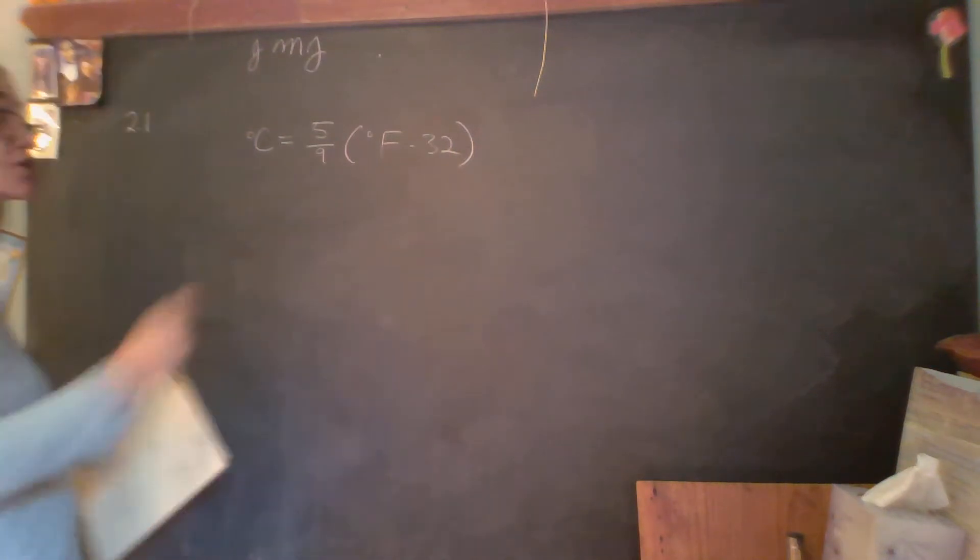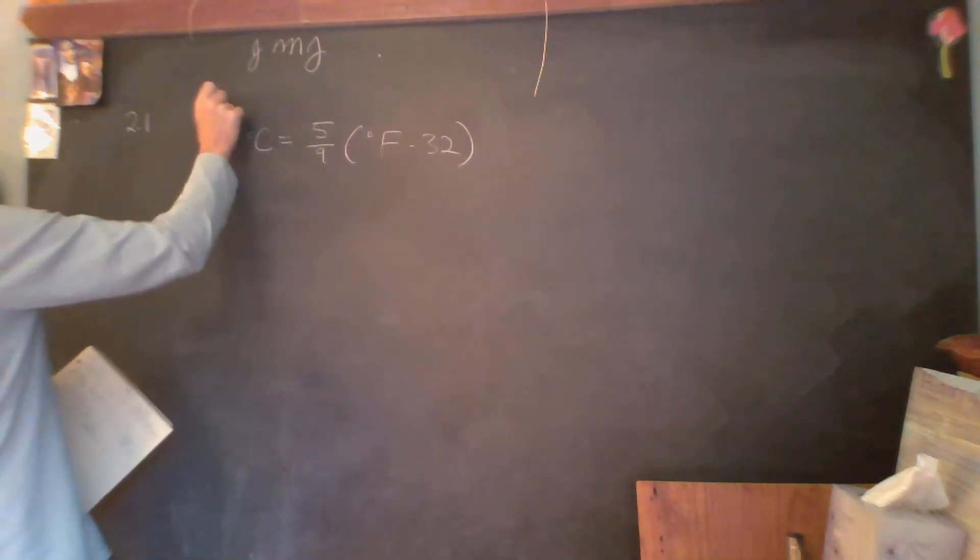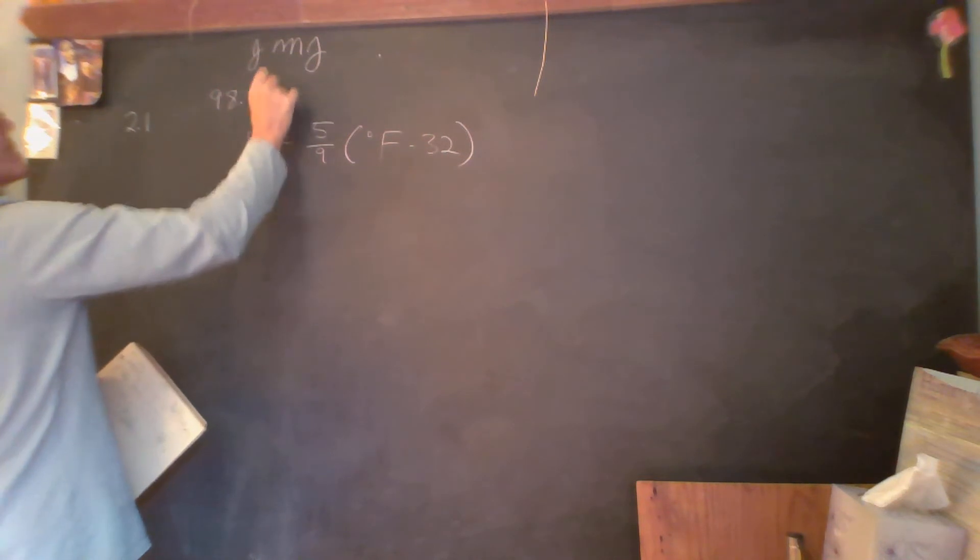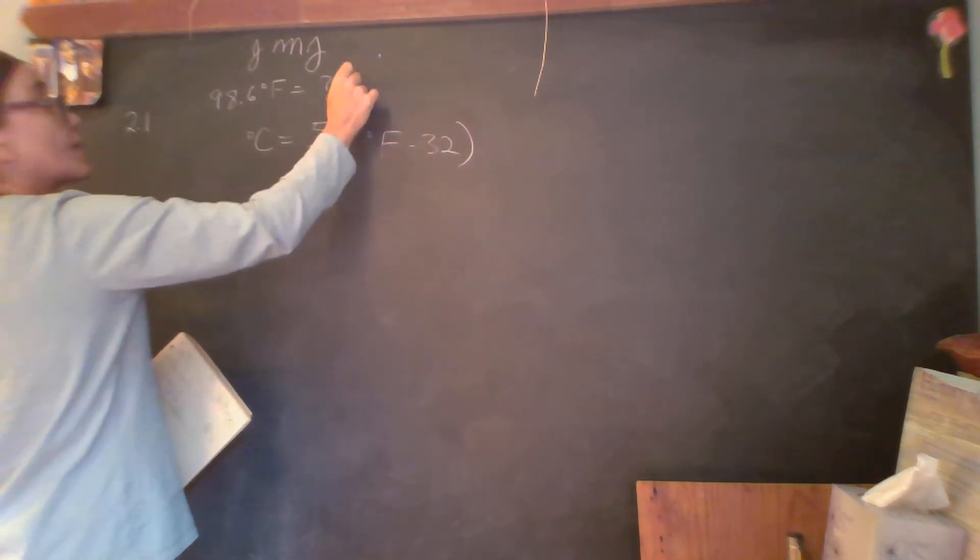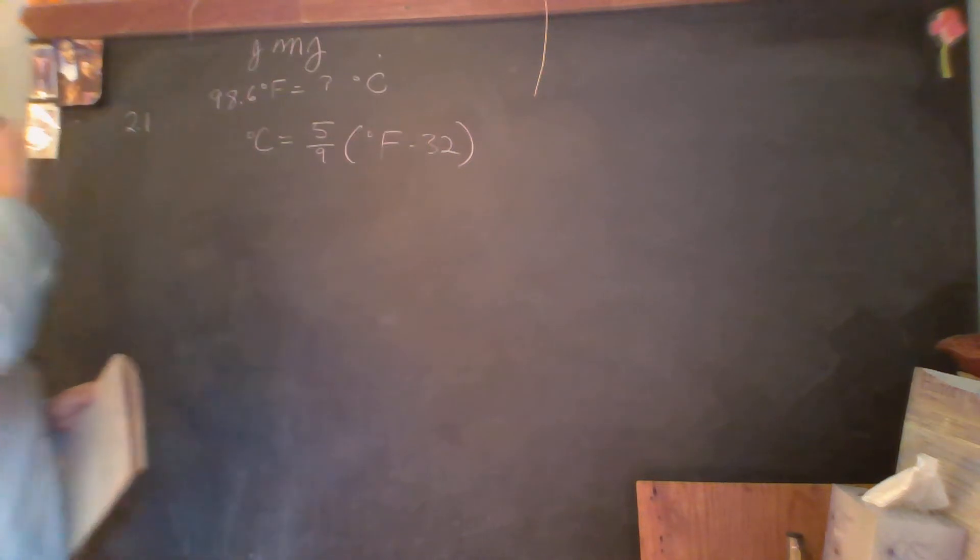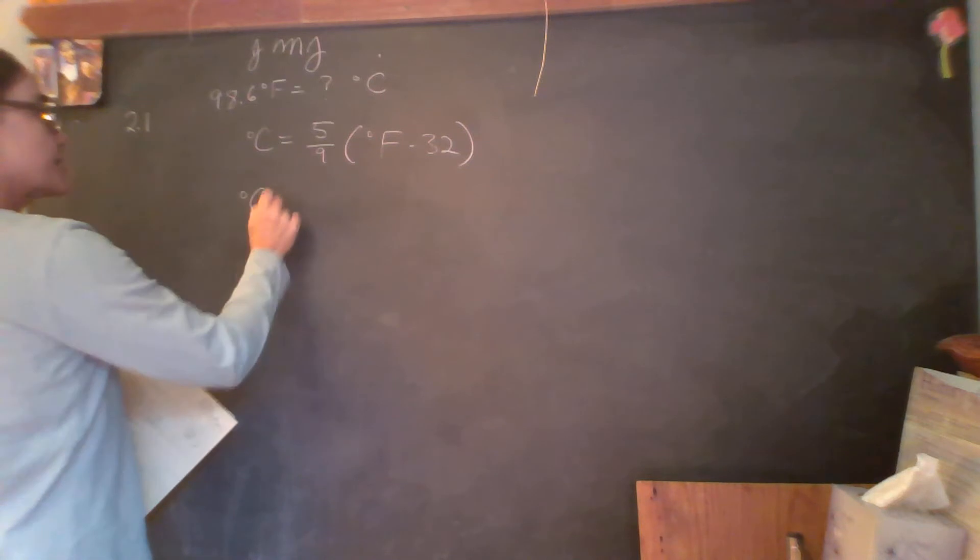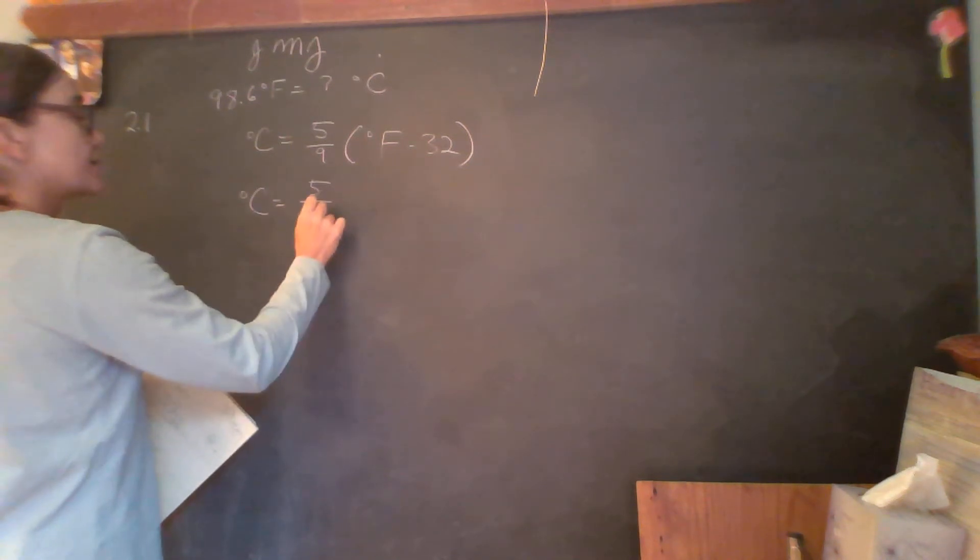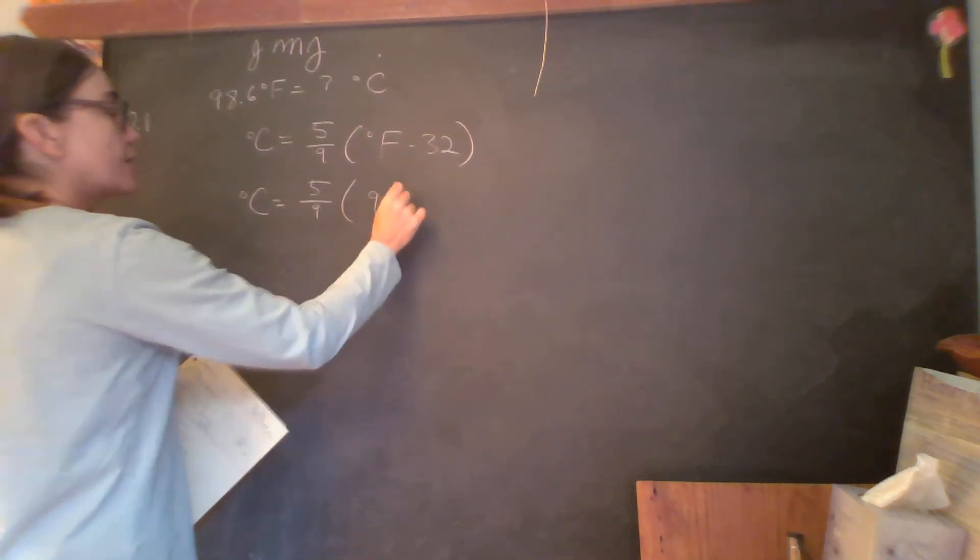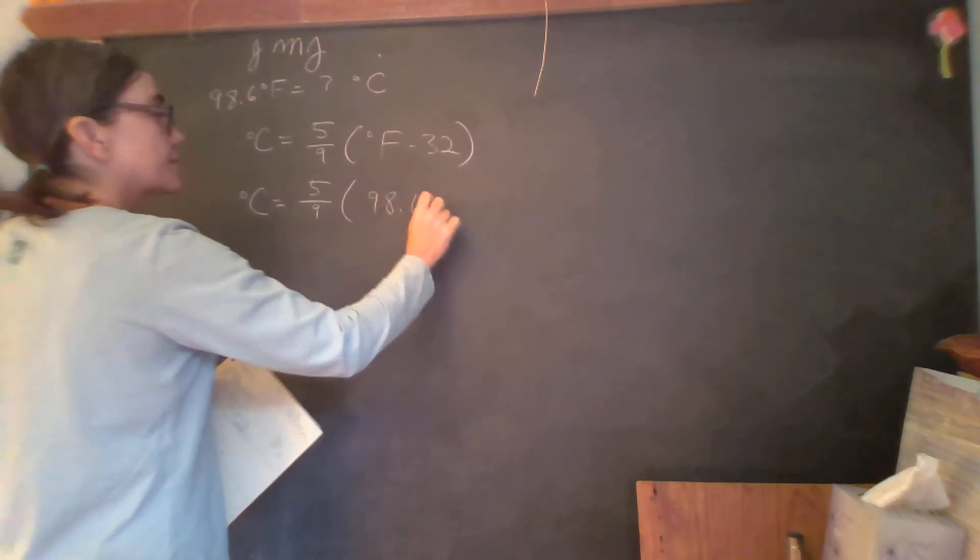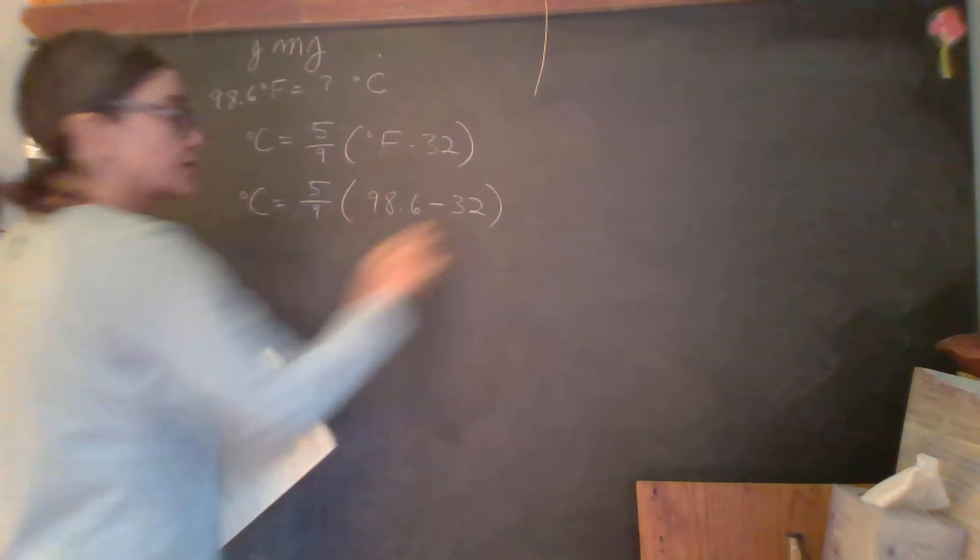Okay, so our Fahrenheit is 98.6. We want to find out what that is in Celsius. So degrees Celsius equals 5 ninths times 98.6 minus 32.